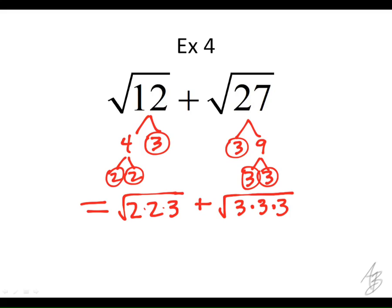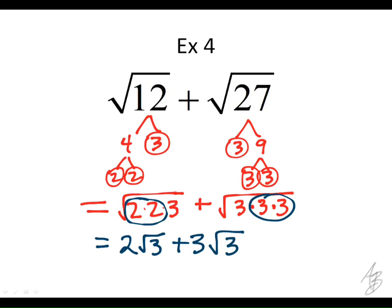Then we find our pairs. I see a pair of 2s in the square root of 12 — what goes on the outside, and what stays inside? And over here, I see a pair of 3s. Can we combine these? Yes, because the insides on both of them have 3 — the radicands are the same, so we can combine them. What do we get when we do 2 square root of 3 plus 3 square root of 3? 5 square root of 3.